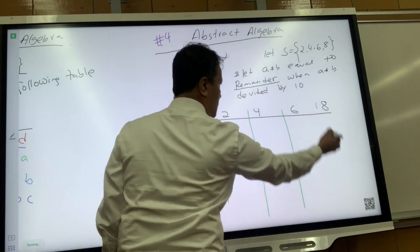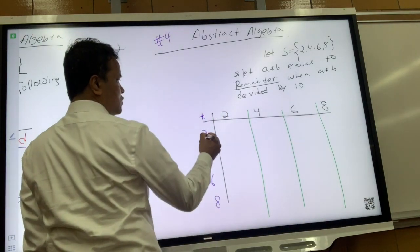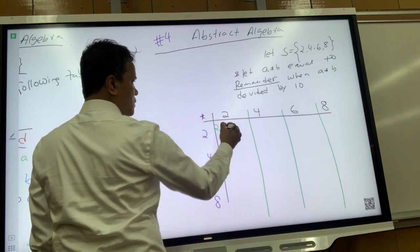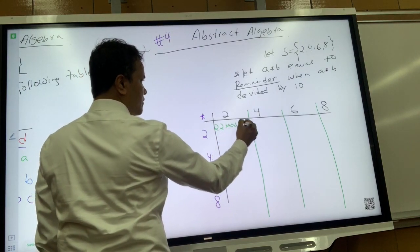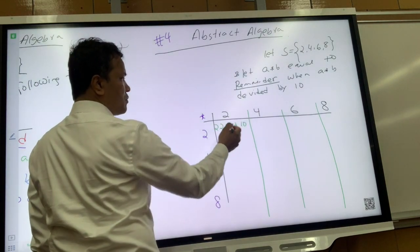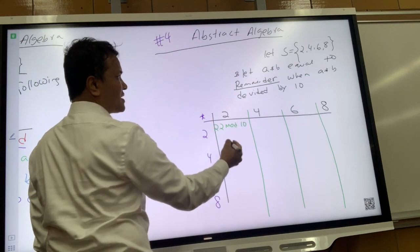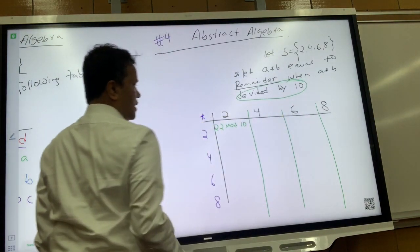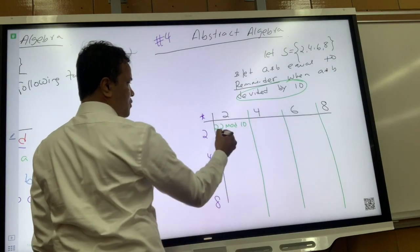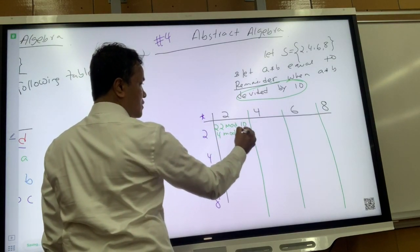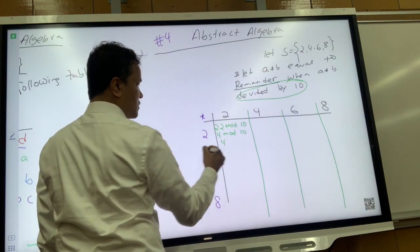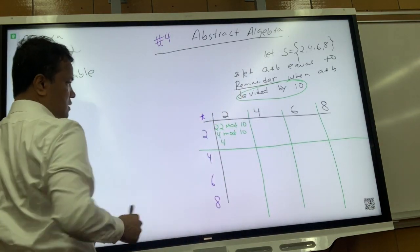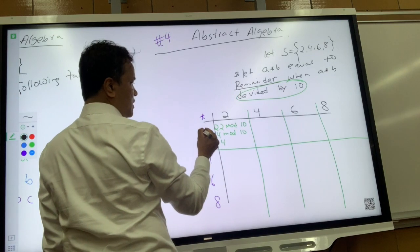We're going to compute 2 times 2 mod 10. So 2 times 2 mod 10 would be 4 mod 10, because we are dividing by 10. So 4 mod 10 is 4. Now the question is: does 4 belong to the set? Yes, 4 is in the set.